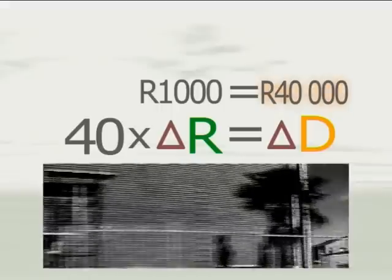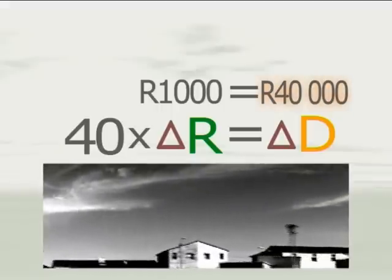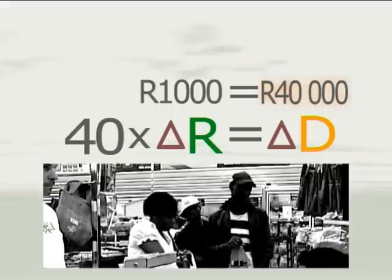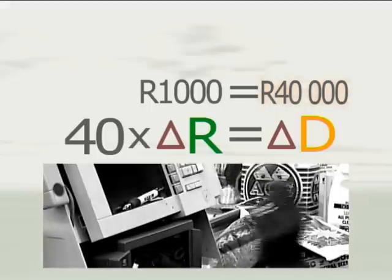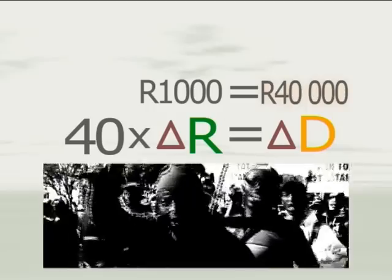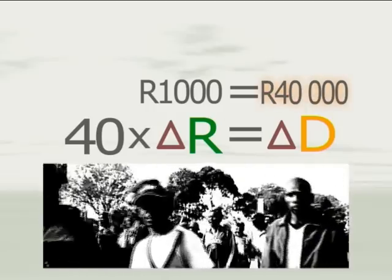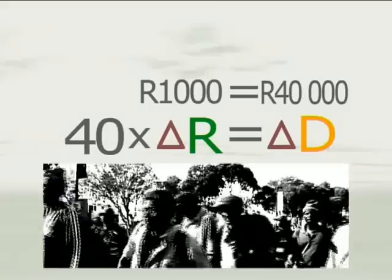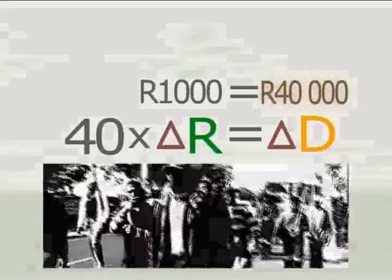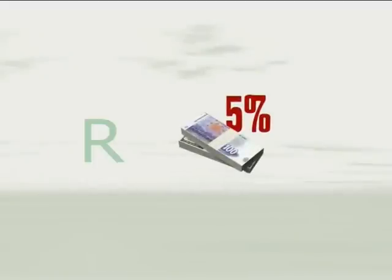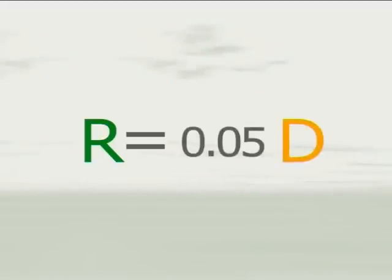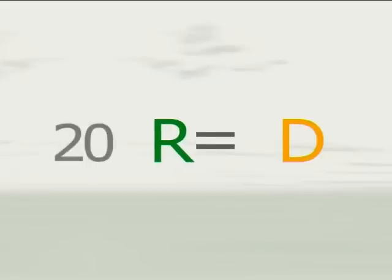Tough economic conditions, spiralling debt and troubled markets could persuade the Reserve Bank to increase the standard cash reserve requirement to ensure that the deposits of citizens are more secure. If this happens, commercial banks will be able to create fewer additional deposits with a given increase in cash reserves. Suppose that the cash reserve requirement increases from 2.5 to 5%. That will mean that the potential change in deposits resulting from an increase in reserves will now be only 20 times larger than the increase in reserves. The credit multiplier therefore has dropped to 20.